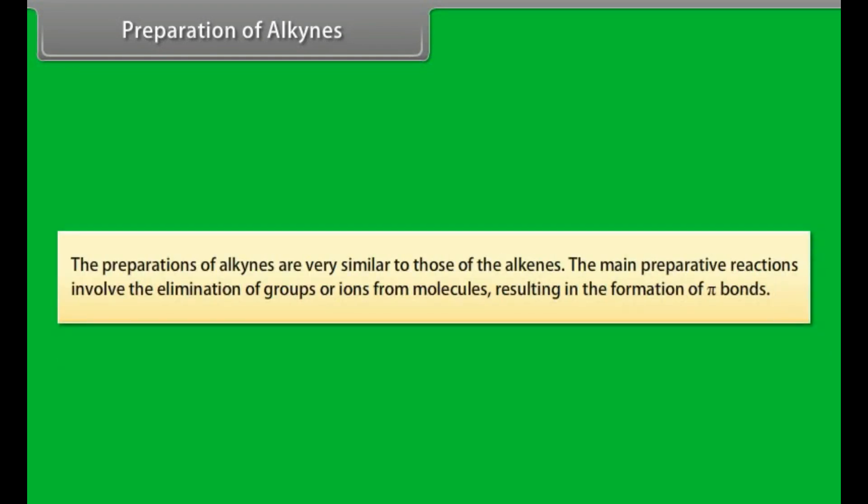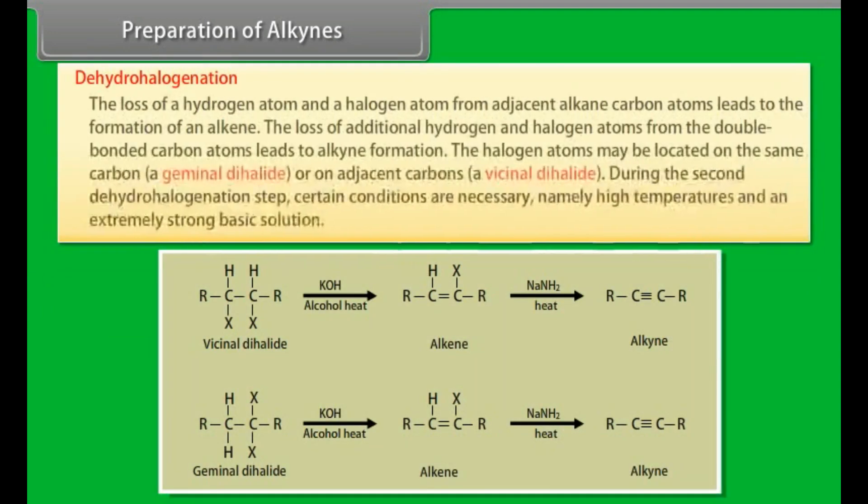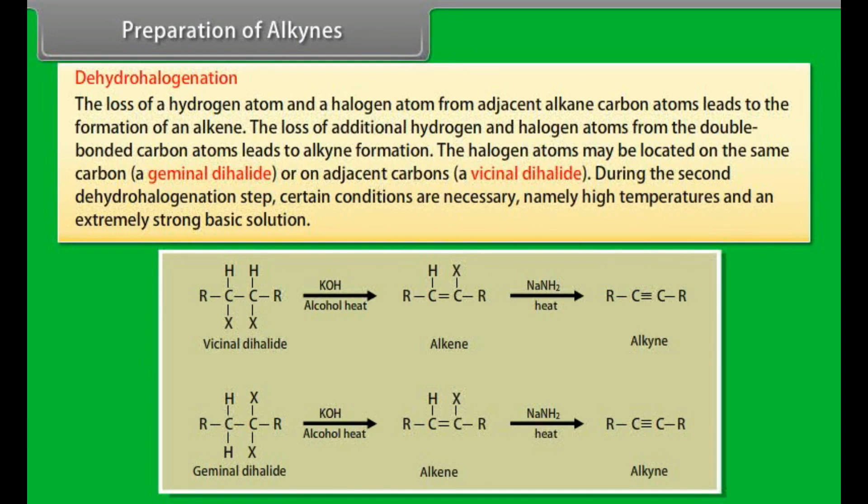Preparation of alkynes. The preparations of alkynes are very similar to those of the alkenes. The main preparative reactions involve the elimination of groups or ions from molecules, resulting in the formation of pi bonds. Dehydrohalogenation. The loss of a hydrogen atom and a halogen atom from adjacent alkene carbon atoms leads to the formation of an alkene. The loss of the additional hydrogen and halogen atoms from the double bonded carbon atoms leads to the alkyne formation. The halogen atoms may be located on the same carbon, a geminal dihalide, or on adjacent carbons, a vicinal dihalide. During the second dehydrohalogenation step, certain conditions are necessary, namely high temperatures and an extremely strong basic solution.